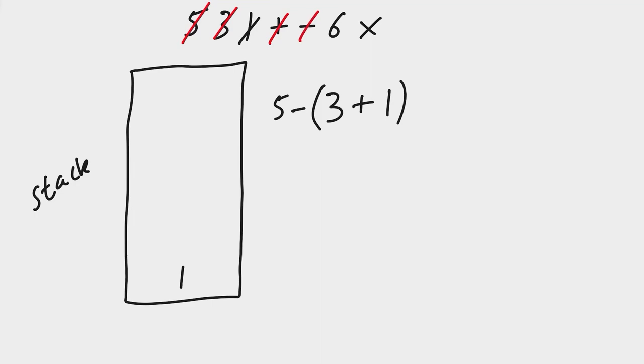Next we add the six to the stack. And then finally we come across the operator multiply. So we need to pop the six and the one off the stack.